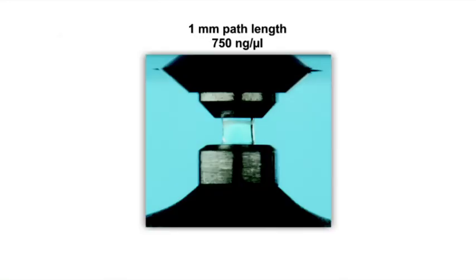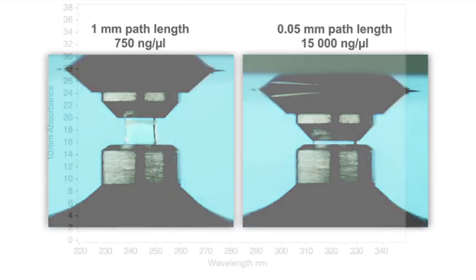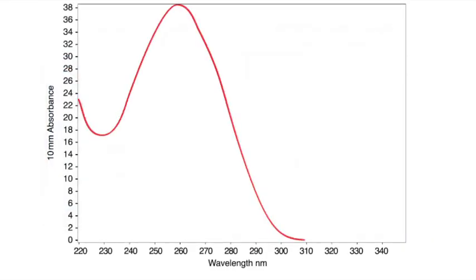The vertical path length can automatically change in real time during the measurement. Shortening the path length enables the measurement of higher concentrations, effectively removing the need to perform dilutions for most nucleic acid samples.